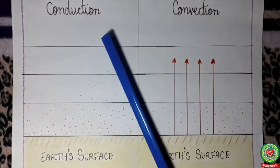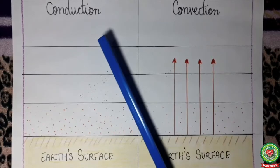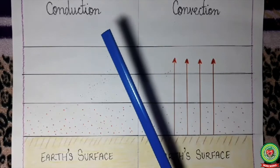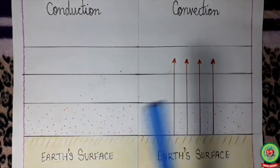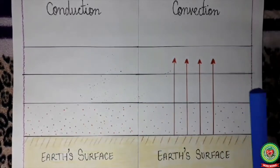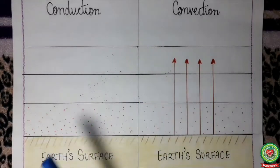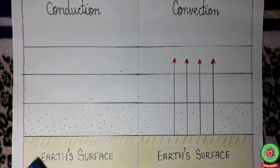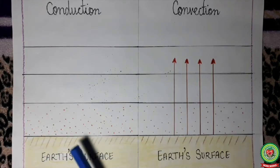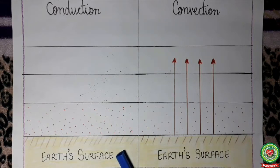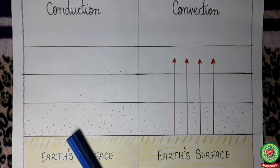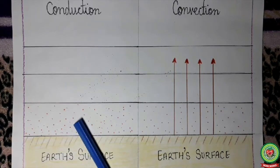Conduction takes place in solids. In conduction, there is transfer of heat through matter by molecular activity. During daytime, due to solar insolation, the earth's surface gets heated. The lowermost layer of the atmosphere, which is in direct contact with the hot earth, is thereby heated by the heat of the earth.